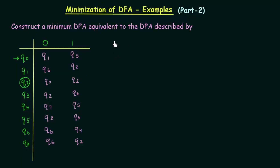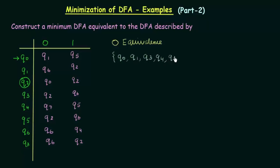We start by writing the equivalences beginning from 0-equivalence. Writing 0-equivalence is very simple: make two sets where the first set contains all the non-final states and the second set contains all the final states. Here the non-final states are Q0, Q1, Q3, Q4, Q5, Q6, and Q7. And the final states — there is only one final state here which is Q2, so I put it in another set. We are done with 0-equivalence and the next one is 1-equivalence.